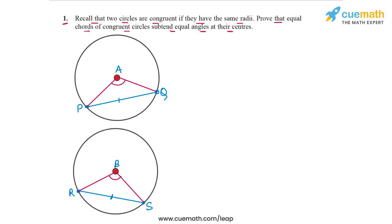So the proof will basically rely on showing that the two triangles APQ and BRS are congruent. And it's very easy to prove this. So let's compare these two triangles, triangle APQ and triangle BRS.